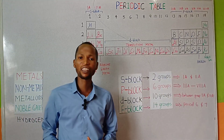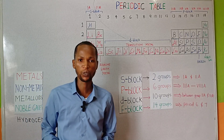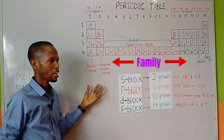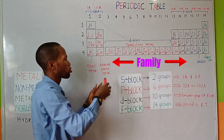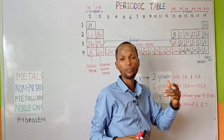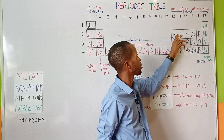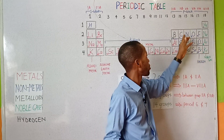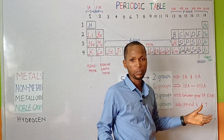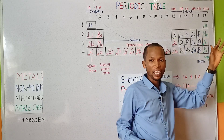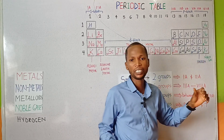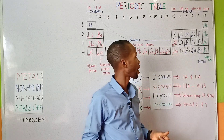We can also classify elements into their respective family in the periodic table. Elements in group 1 are known as the alkali metals. Elements in group 2 are known as alkaline earth metals. Group 13 is the boron family. Group 4A elements are the carbon family. Group 5A elements are the nitrogen family. Group 6A is the oxygen family, also known as the chalcogens. Group 7A elements are known as the halogen group. And group 8 elements are known as noble gas, rare gas, also known as inert gas.